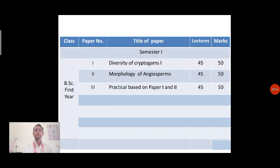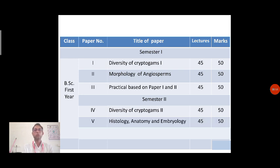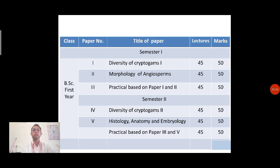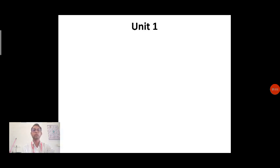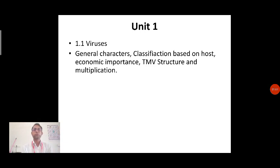Morphology of angiosperm is the second paper, and based on these two different papers there will be a practical. This is the total scenario related to botany. In addition, a skill-enhanced subject is also included in our syllabus. So I am going to talk about the diversity of cryptogames in today's lecture.